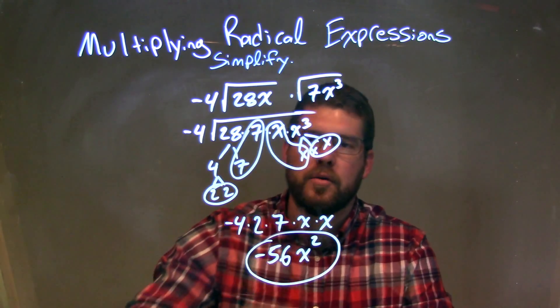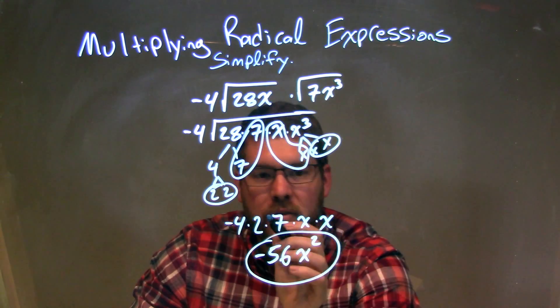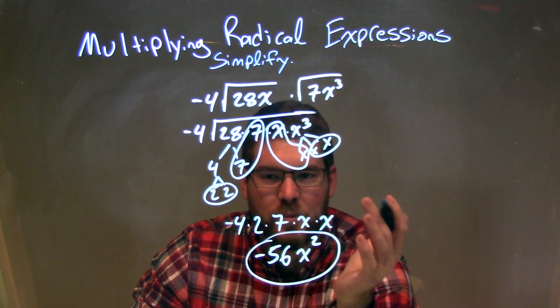We had a pair of 2s, a pair of 7s, and two pairs of x's. Every pair is represented by a single element outside the square root, and there's nothing left inside the square root, so that disappeared.